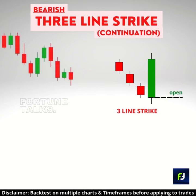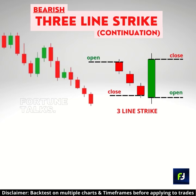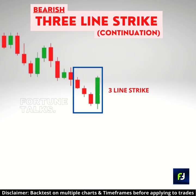The strike candle should open at or lower than the close of the third candle and close greater than the open of the first candle. The pattern implies that the bears are in control and there is a strong downward movement shown by the three red candles.